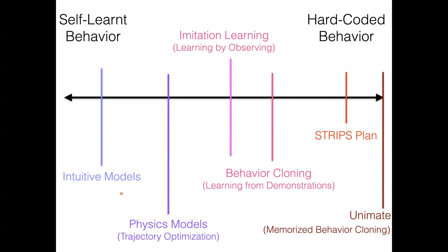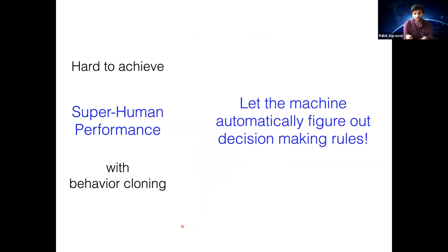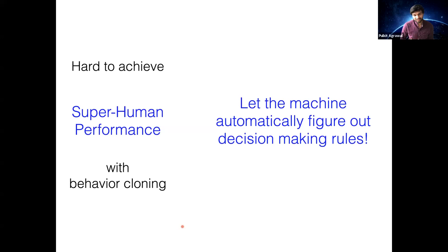We ended our last lecture seeing that behavioral cloning can achieve good performance, but it is hard to achieve superhuman performance with behavioral cloning. What we wanted to do was to have algorithms which automatically figure out how they make decisions. In this lecture, we'll focus on the challenges and some concrete algorithms for decision making.